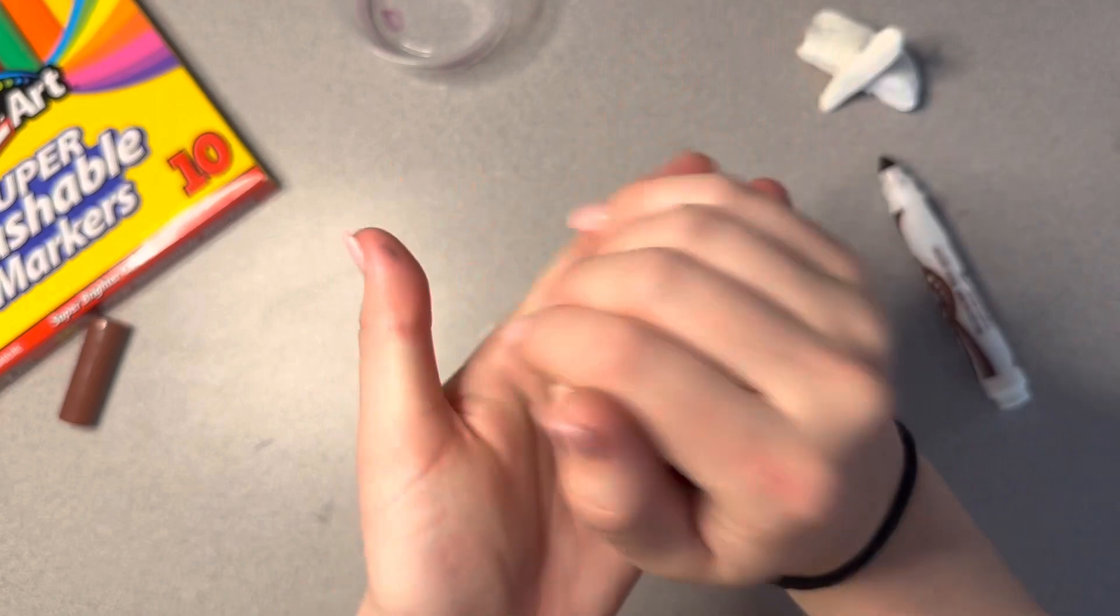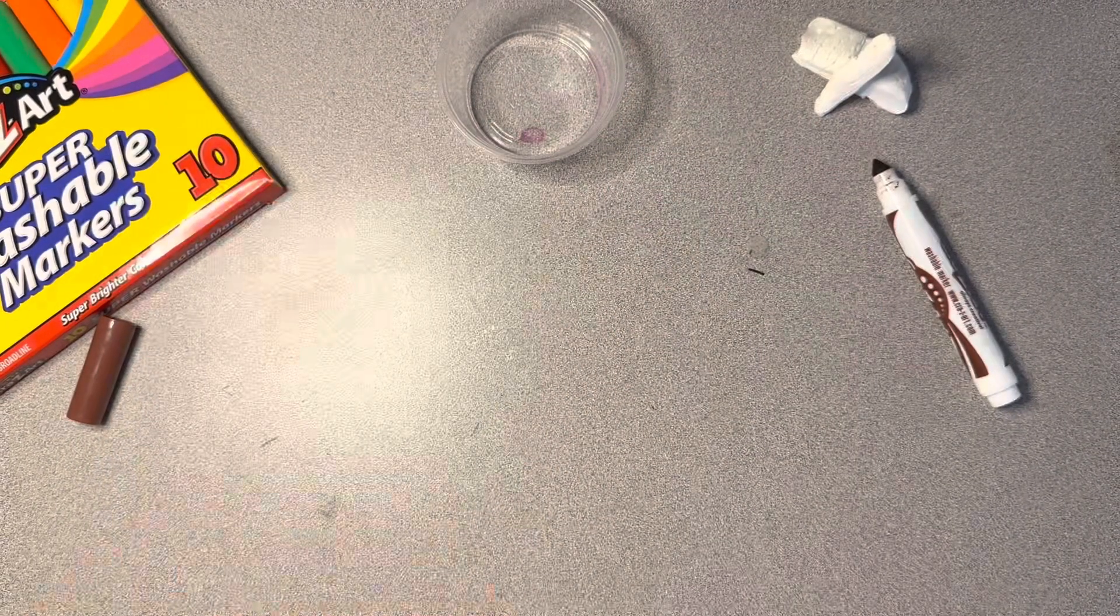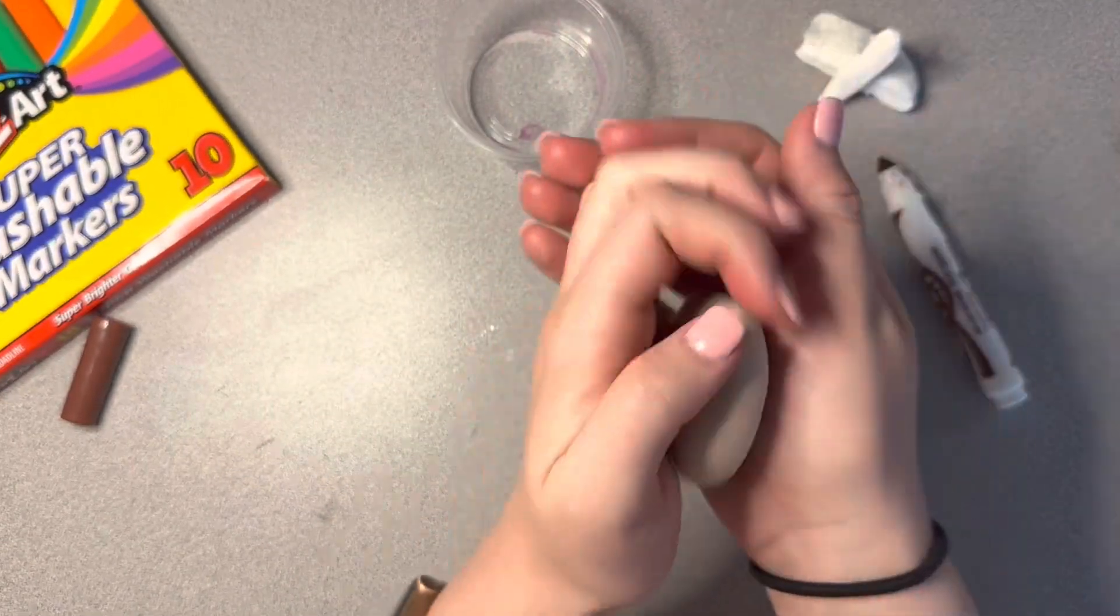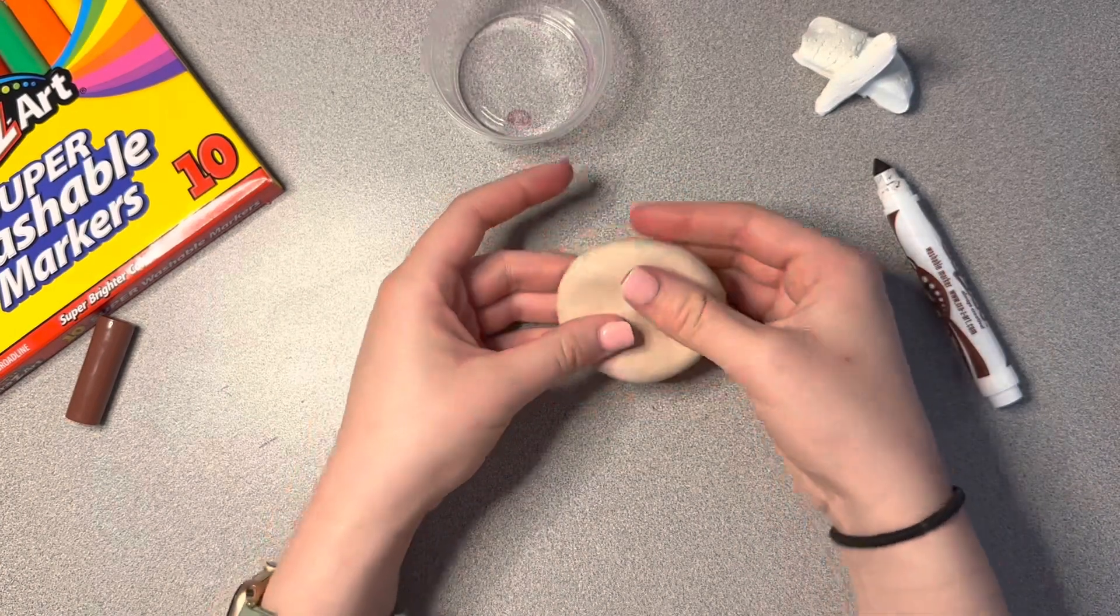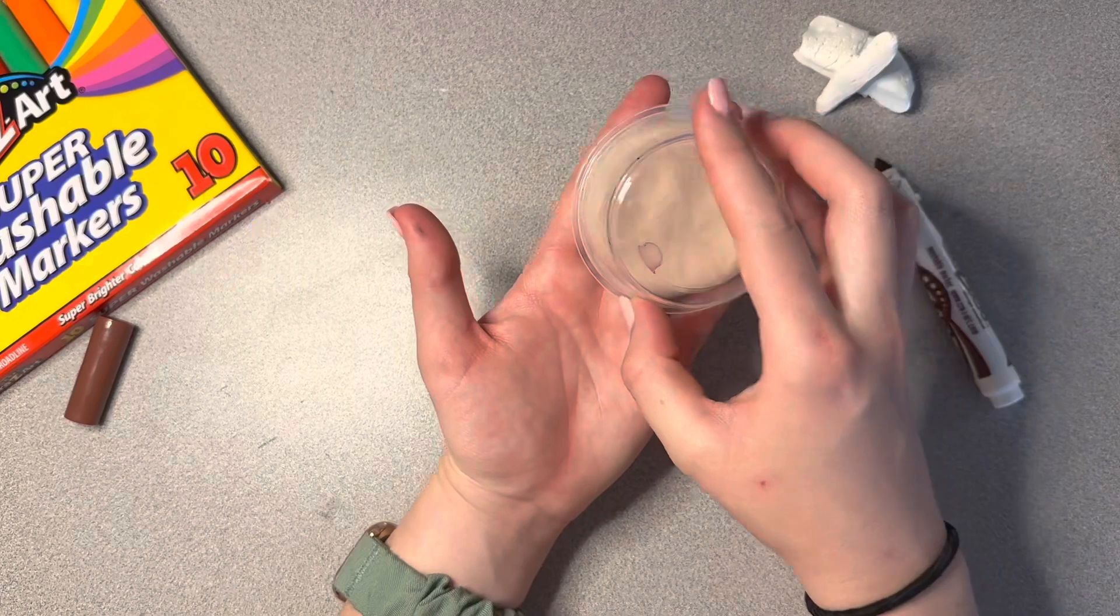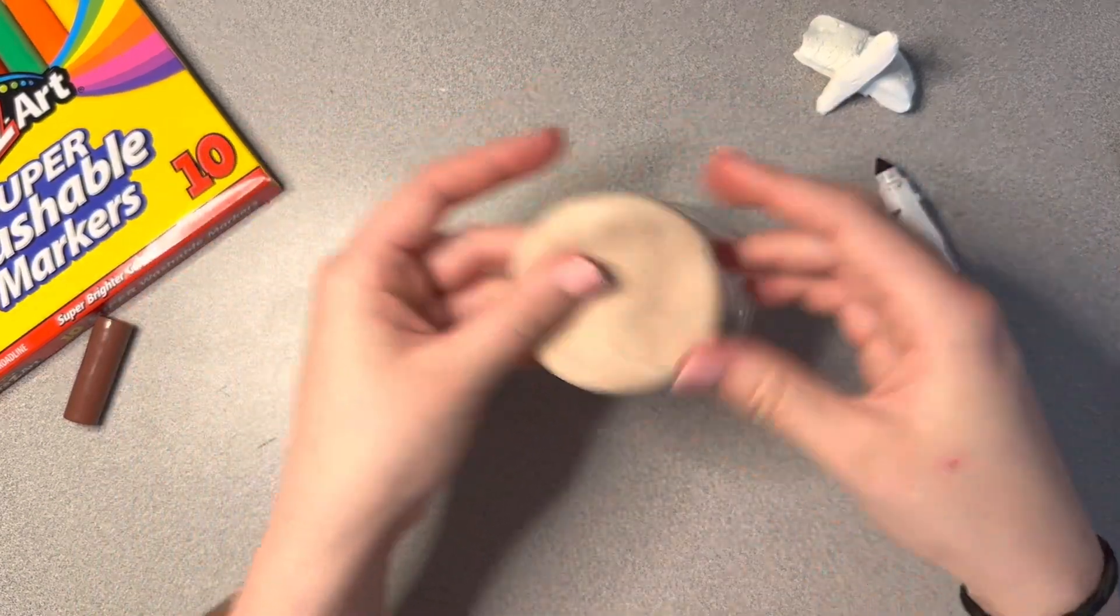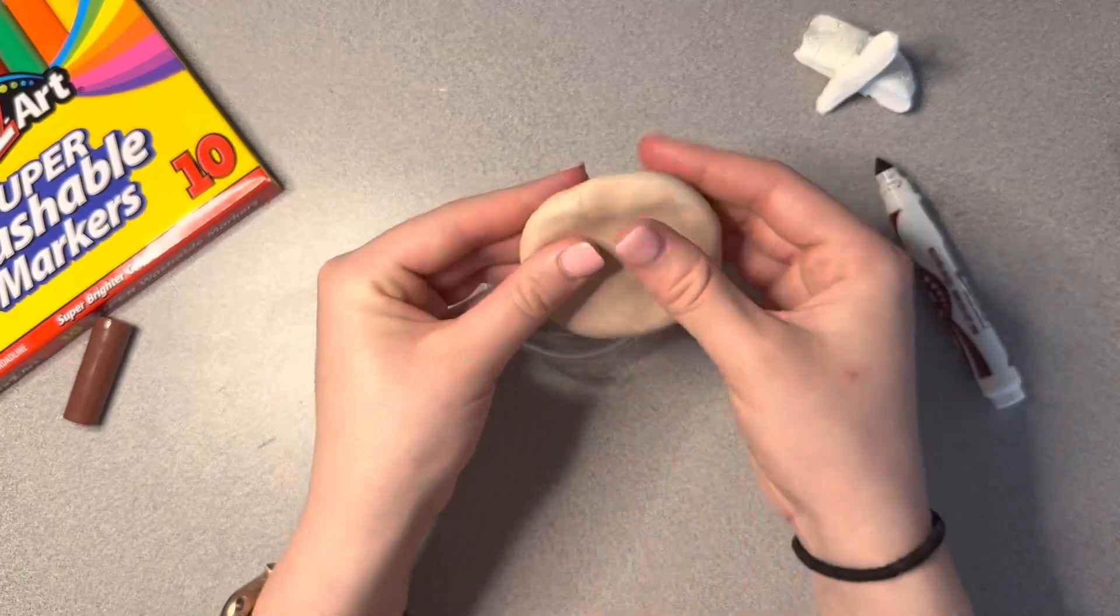The easiest way to make the shape of your cookie is to roll a ball and then flatten it between your hands, either like this or you can kind of pinch and turn. The reason you have the cup is to measure. You want the cookie to be about as big as the top of the cup. So I'm almost there.